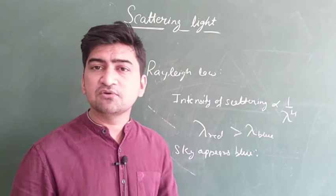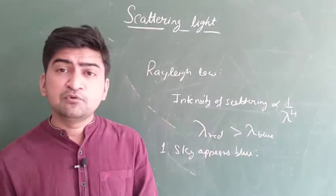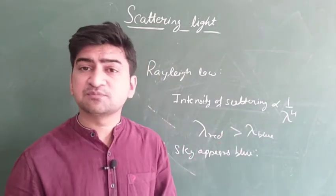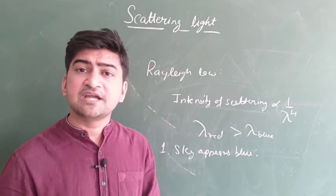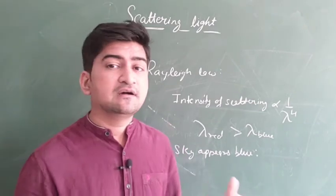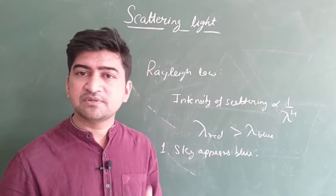Which scatters more? Blue scatters more because lambda is less, intensive scattering is more. According to this formula, blue light is more scattered. The intensive scattering of blue light is more in the earth's atmosphere. That's why the atmosphere of the earth appears blue. Hence we can say sky appears blue.